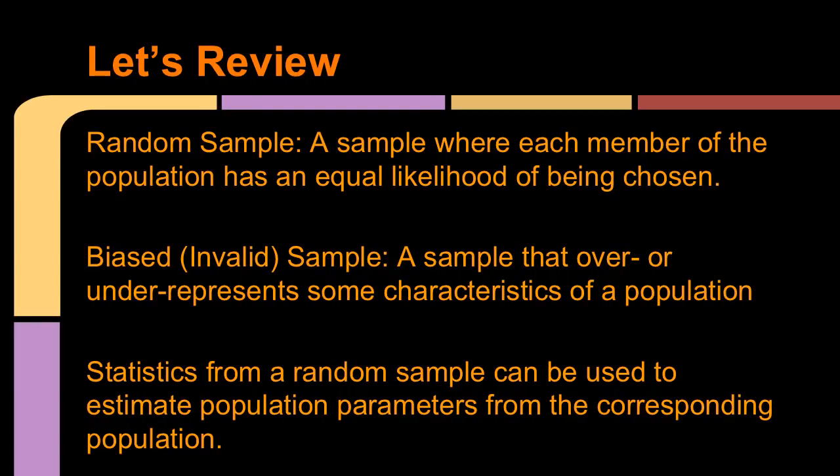Let's start with a little review. We talked in an earlier lesson about a random sample, and that means you have a sample where each member of the population has an equal likelihood of being chosen. It's important that your sample is random because then it would be valid or unbiased. It would be good to use for a prediction.